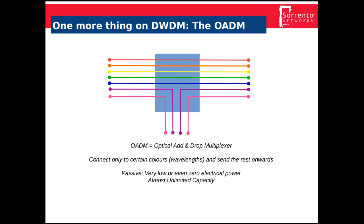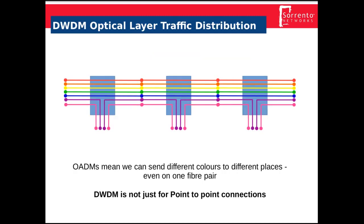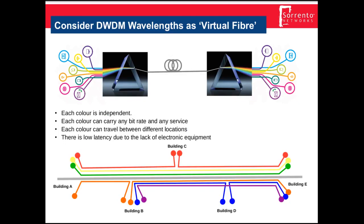There's virtually zero power involved, it's very compact, no configuration is required, and isolation and flexibility are assured. This means we can build distribution networks that drop different channels in different places across the network. So DWDM, although best known for point-to-point connections, can also do traffic distribution. Different types of channels can be carried completely independently of each other.